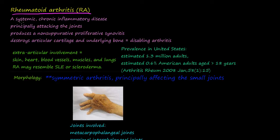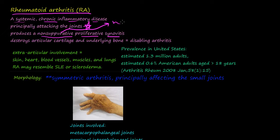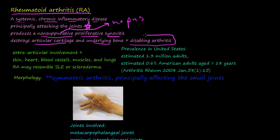So what is rheumatoid arthritis? It's a systemic chronic inflammatory disease. It principally affects joints, but it can affect the lungs, other blood vessels, and heart — but it mostly affects the joints. It produces a non-suppurative proliferative synovitis, meaning no pus, and inflammation of the synovial membrane in the joints that just keeps growing. It destroys articular cartilage and the underlying bone in severe cases, and that results in a disabling arthritis.